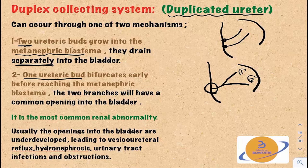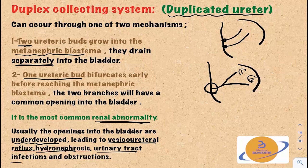This is the most common renal abnormality. Either way, the openings into the bladder are underdeveloped, so this will lead to vesico-ureteric reflux, hydronephrosis, urinary tract infections, and obstructions.